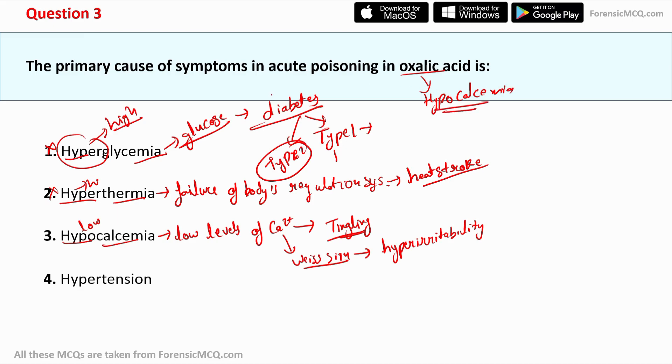Option 3, hypocalcemia, is the correct answer. Option 4, hypertension, means high blood pressure and is not the correct answer. Now let's move to question number 4.